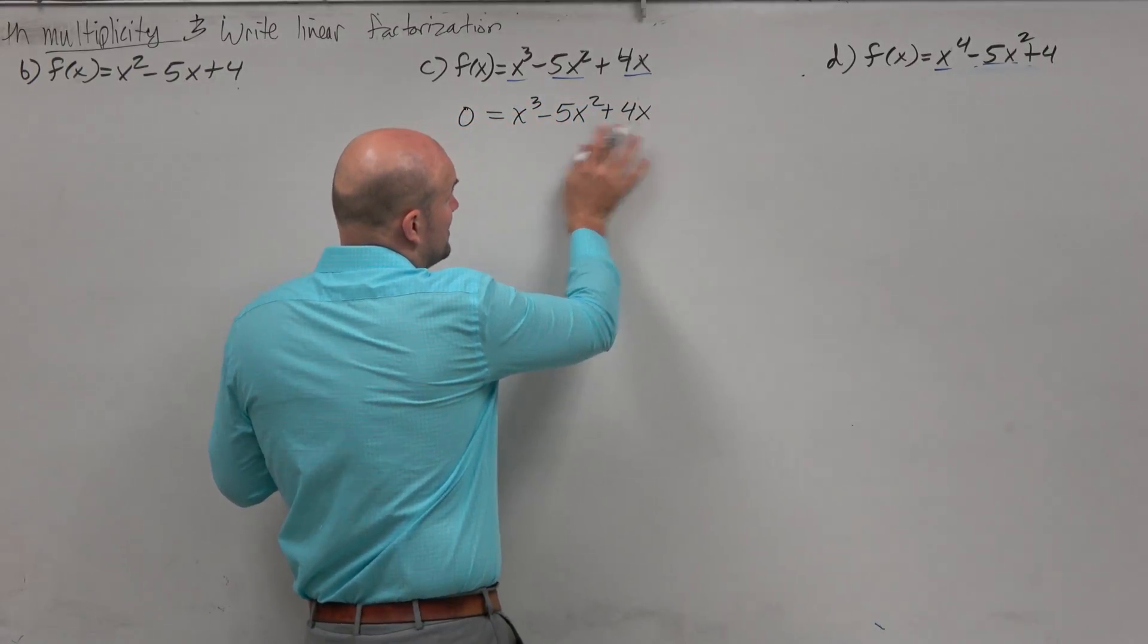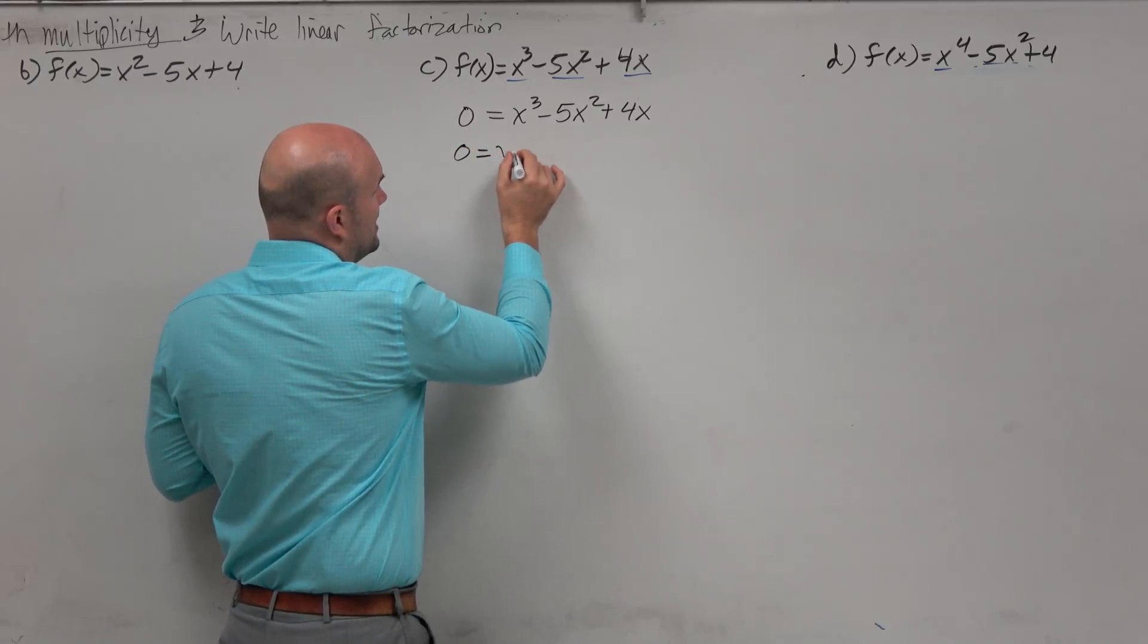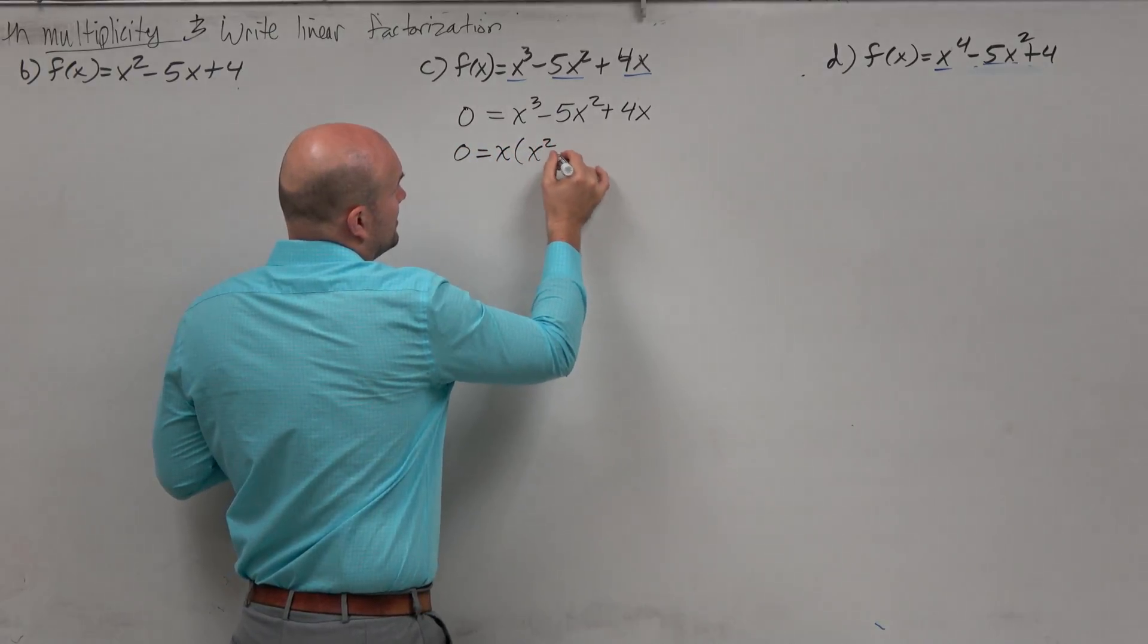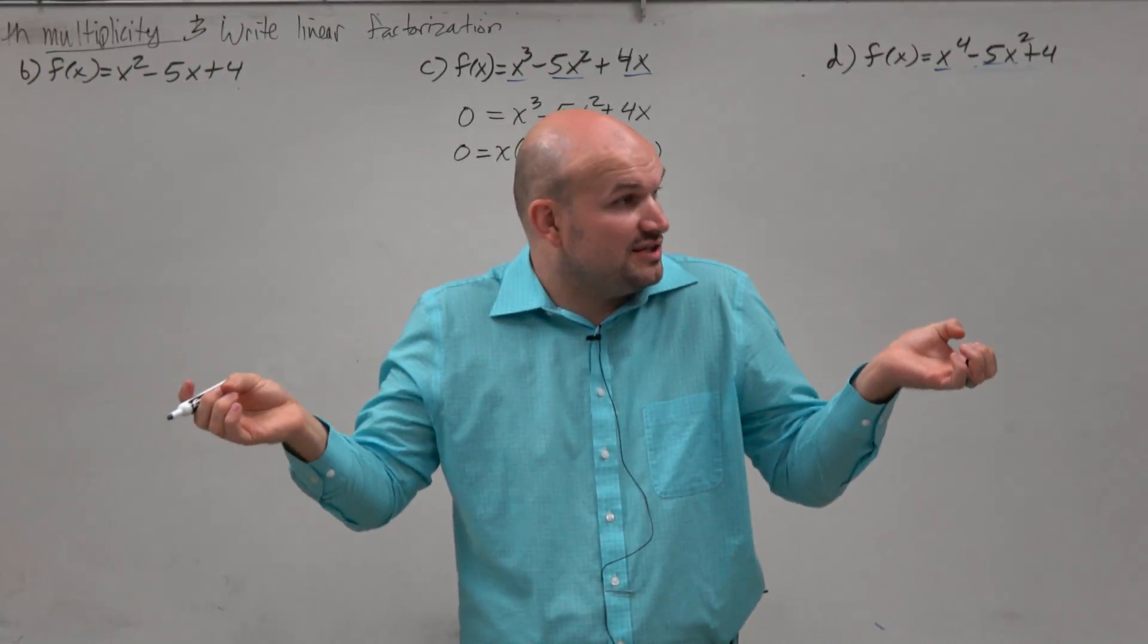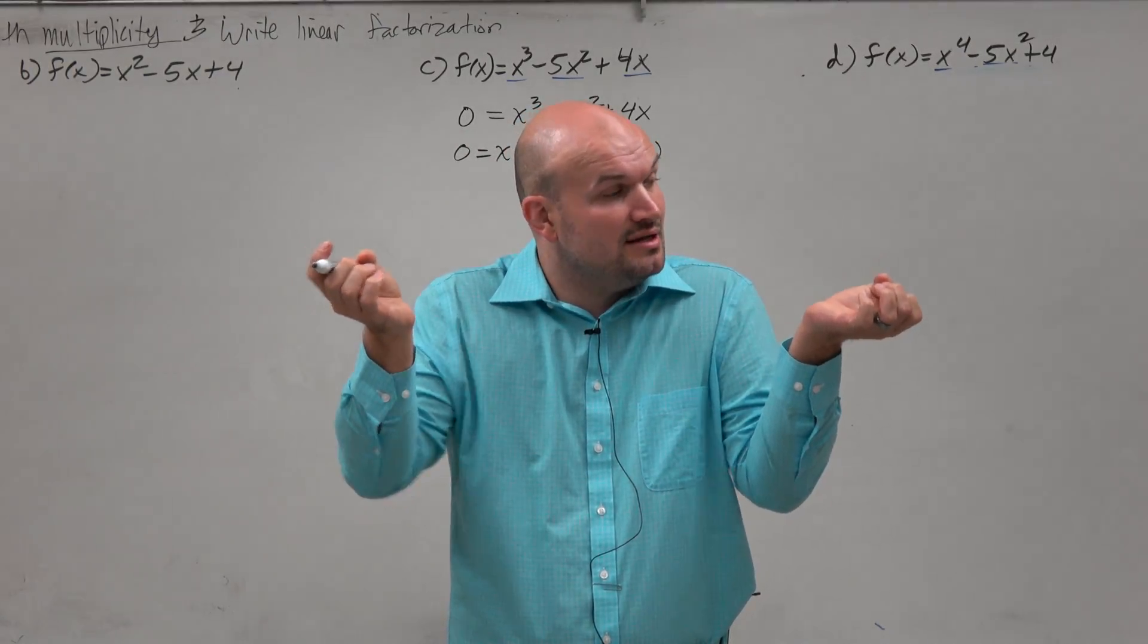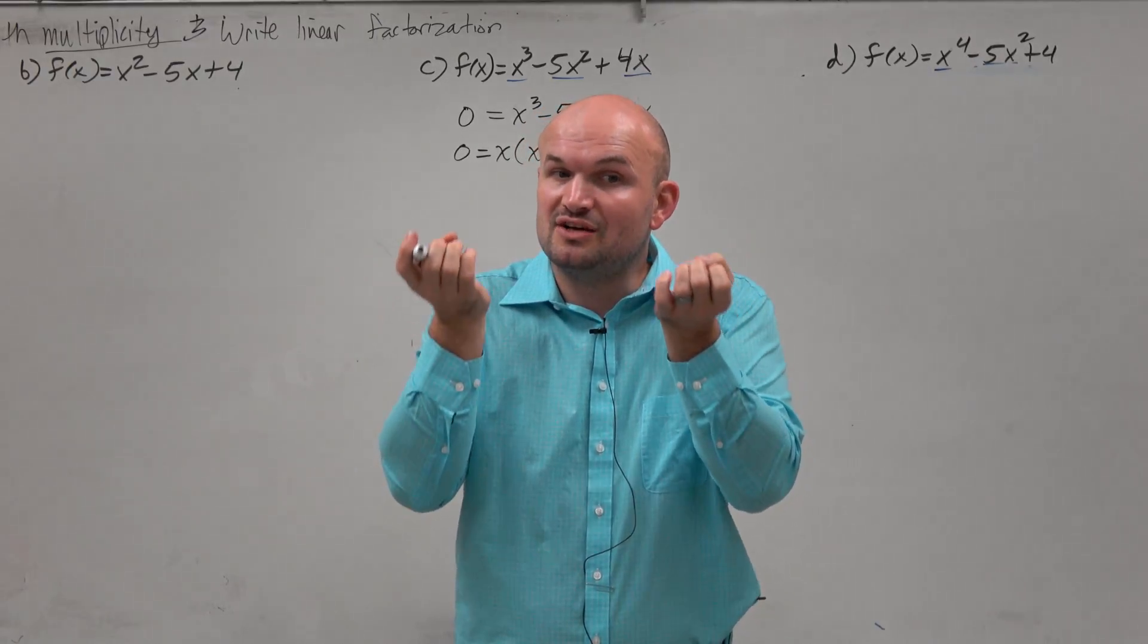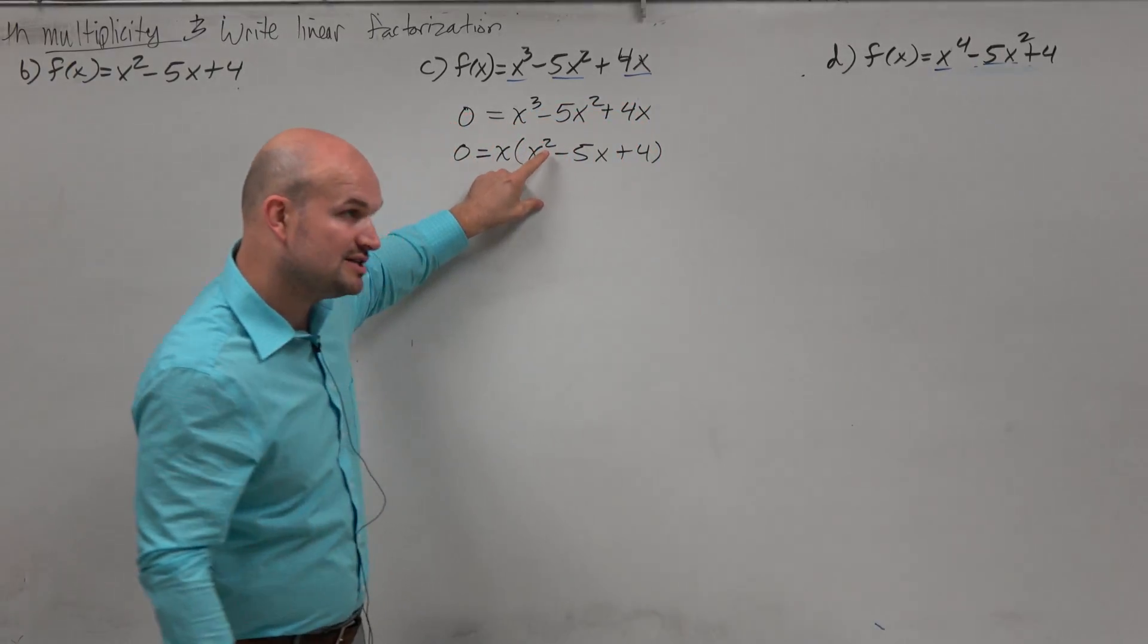You can see here that we can factor out an x. So as I factor out an x, I get x squared minus 5x plus 4. But the problem is, I just factored this, I just rewrote this as a product. The problem is I didn't write this as a product of linear factors. This is a factor, but it's a quadratic.